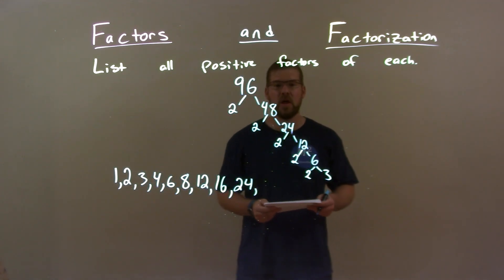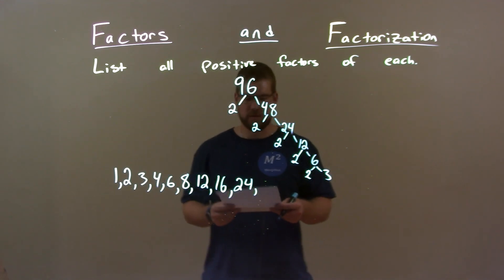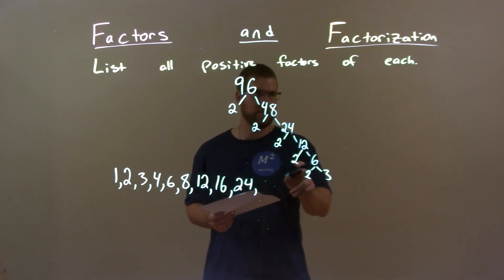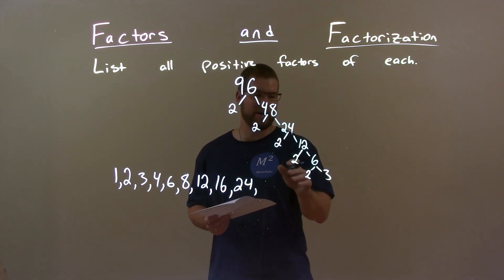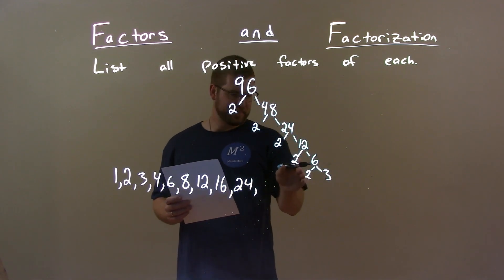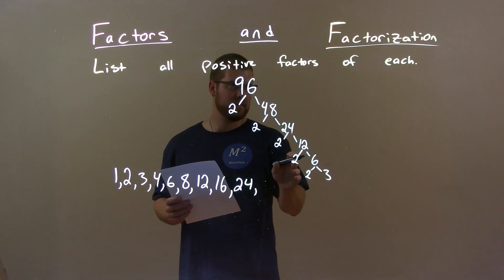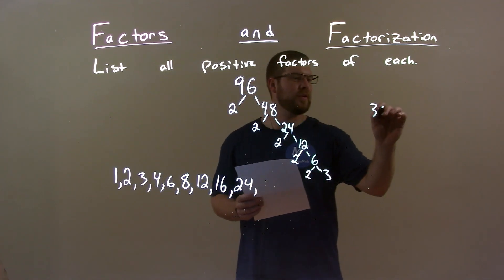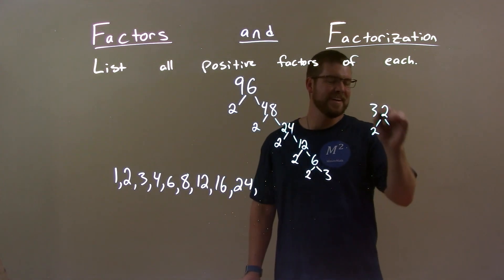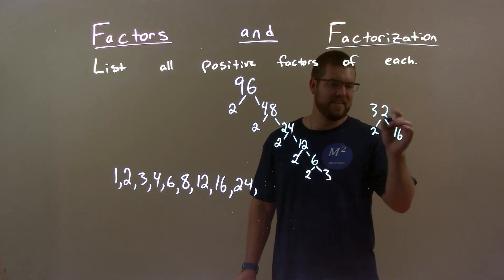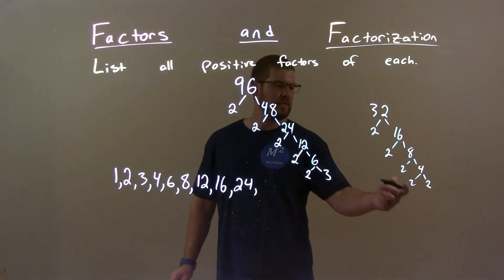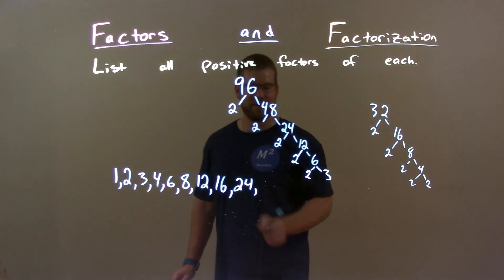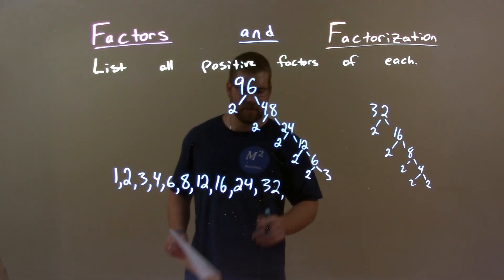Then we have nothing again until 32. Let's break this down. 32 comes from five 2's — 2 times 2 is 4, times 2 is 8, times 2 is 16, times 2 is 32. I should have caught that one, but it's all good.